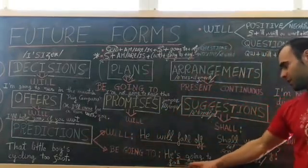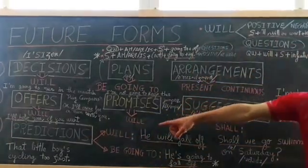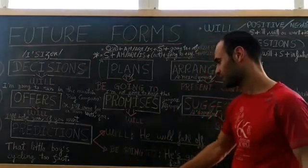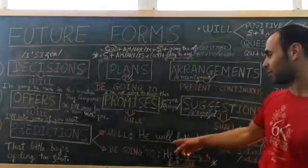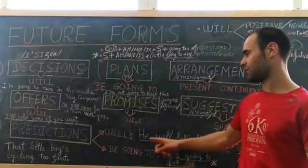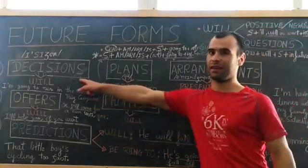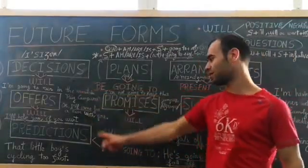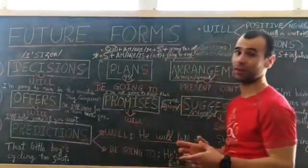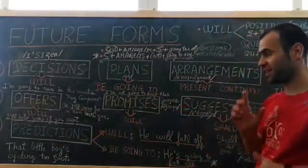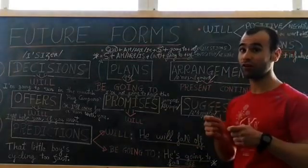For example, that little boy is cycling too fast, so you can say he's going to fall off or he will fall off. With 'will' is like a decision, but with a prediction, it's depending on the situation.